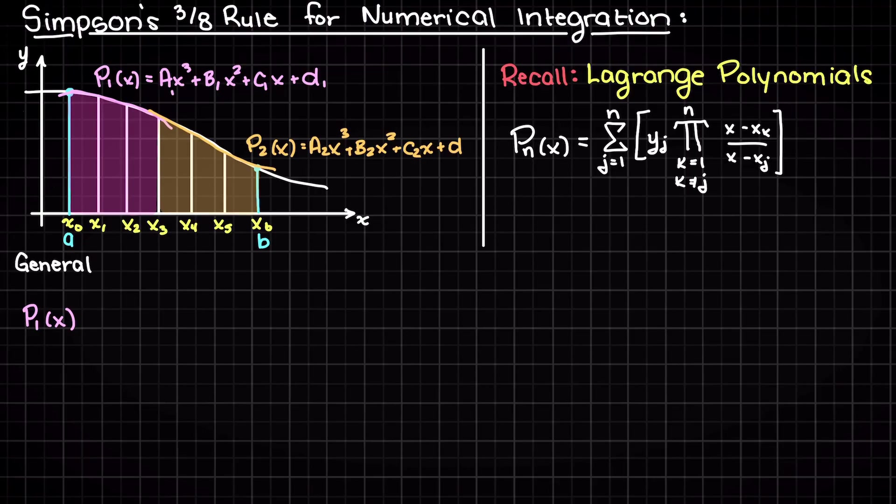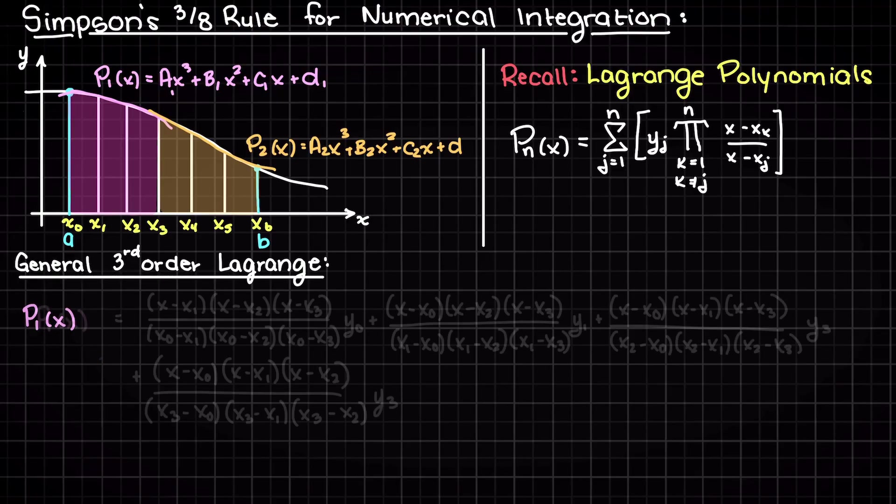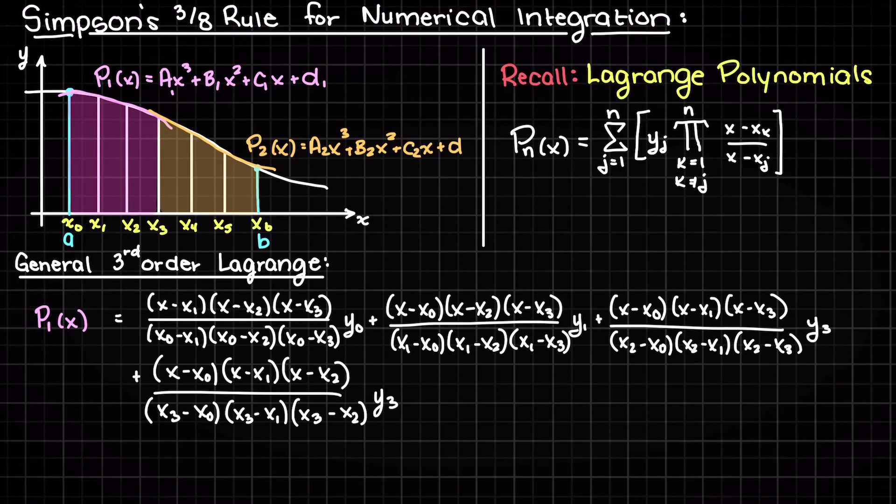Therefore we can say that this function here can be approximated as a third order Lagrange polynomial which, as a general function, looks like this. If you are unsure how I came up with this general function, I recommend you check out our Lagrange polynomial theory video which I will link down below.